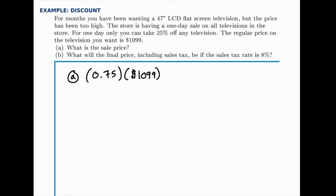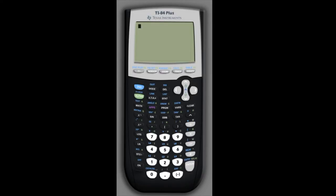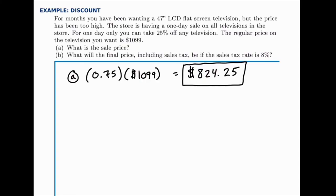So we need to calculate 0.75 times $1,099, which we'll do on the calculator. 0.75 times $1,099 gives us $824.25. So after the discount is applied, the price is $824.25.